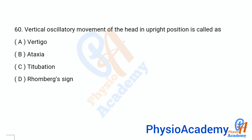Question 60: Vertically oscillatory movement of the head in the upright position is called — Option A: vertigo. Option B: ataxia. Option C: titubation. Option D: Romberg sign. The correct answer is option C, titubation.